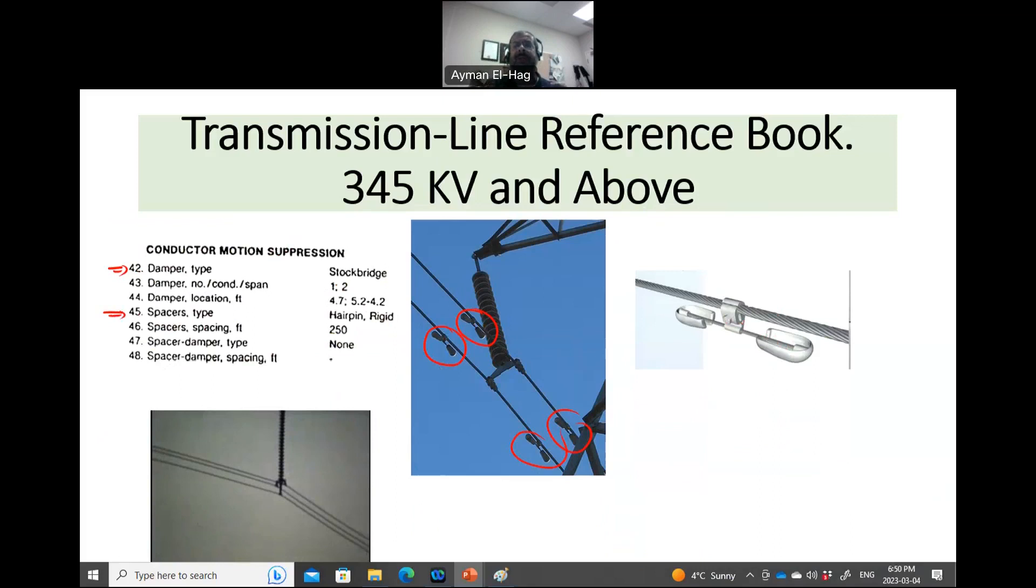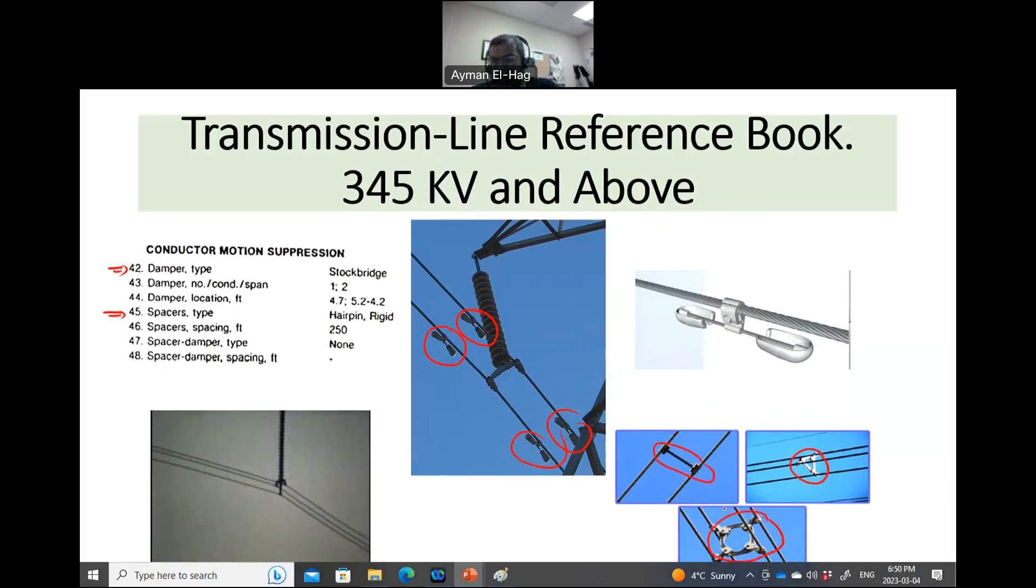Another thing is the spacer. Now, whenever you have more than one conductor per phase, you have to connect these conductors together so that whenever there's wind, they will not be touching or hitting each other. So you keep the space uniform. And this is something important in calculating the inductance and the capacitance. So here, this is a bundle of two, bundle of three, bundle of four. And you have here, you see here the spacer that is connecting these conductors to maintain that space uniform throughout the conductor. So that's, I would say, just an ABC about overhead transmission lines.